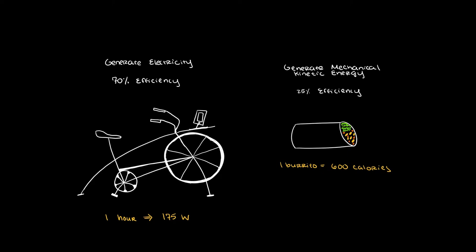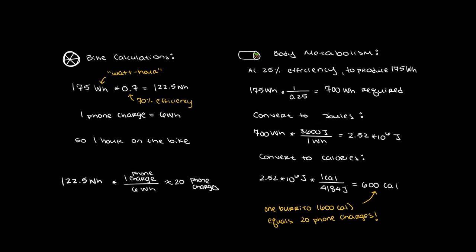In order to solve this problem, we can first convert the 175 watts that one hour consistent pedaling produces to 175 watt hours. Since the energy stored in the battery is only 70% efficient, the energy product will be 175 watt hours times 0.7, which will be 122.5 watt hours.